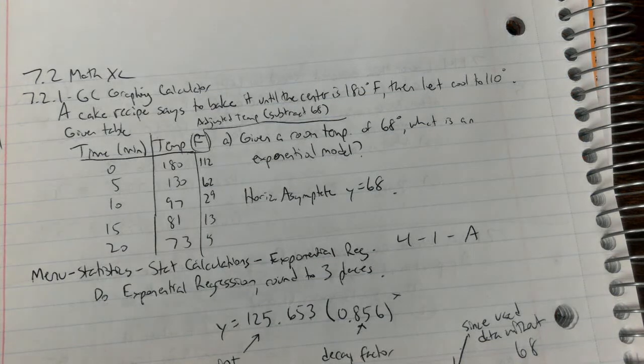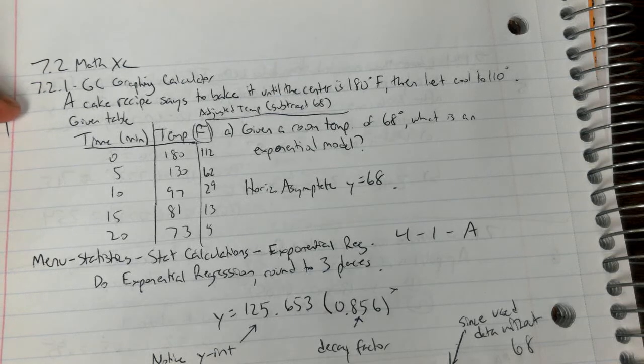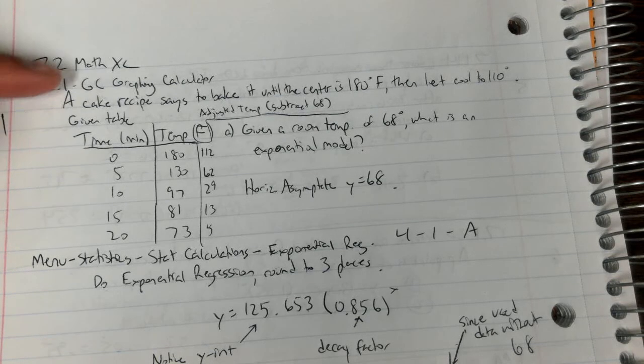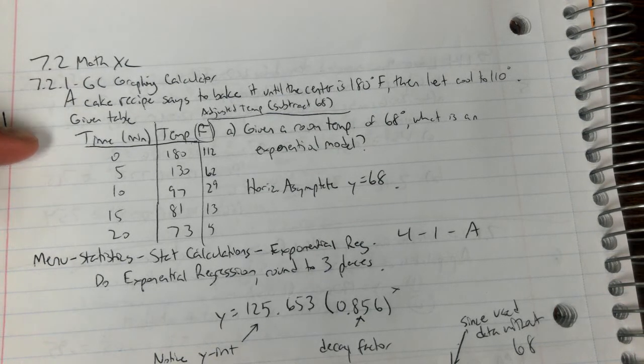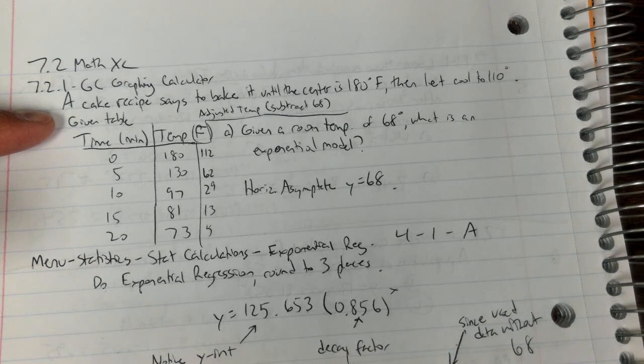Hey everybody, this is your 7.2 Math Excel video and you're going to be using your graphing calculator on this one. The problem is a cake recipe says to bake it until the center is 180 degrees Fahrenheit, then let it cool to 110.